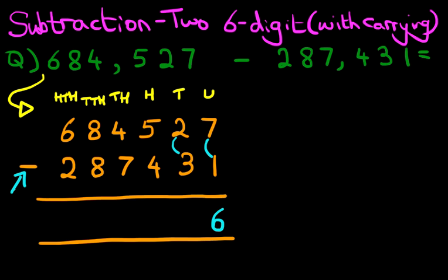We're going to have to take one from the number to its left, which is the five. So let's cross out five — five minus one is four — and the one we have taken we're going to move it to the right, so the tens column now reads twelve minus three. Twelve minus three is nine.